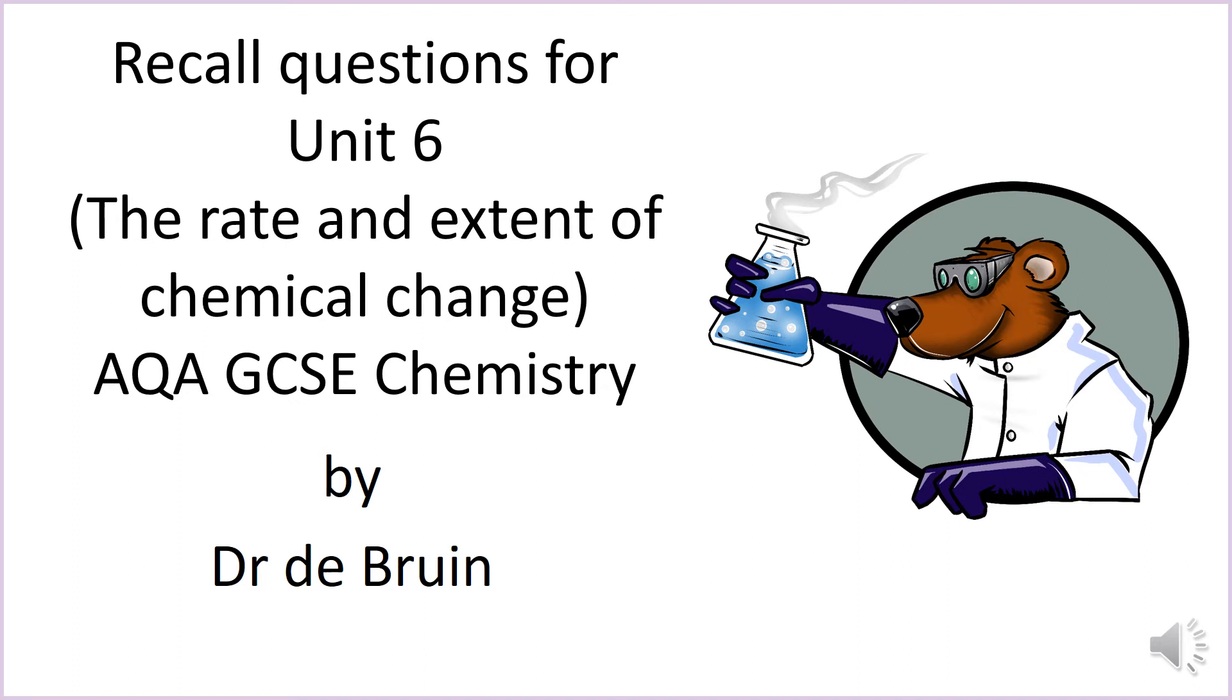This is a revision video for AQA GCSE Chemistry or Combined Science Unit 6, The Rate and Extent of Chemical Change, which is all about how we can speed up chemical reactions or, if it's a reversible reaction, how we can change the amount of product being made.